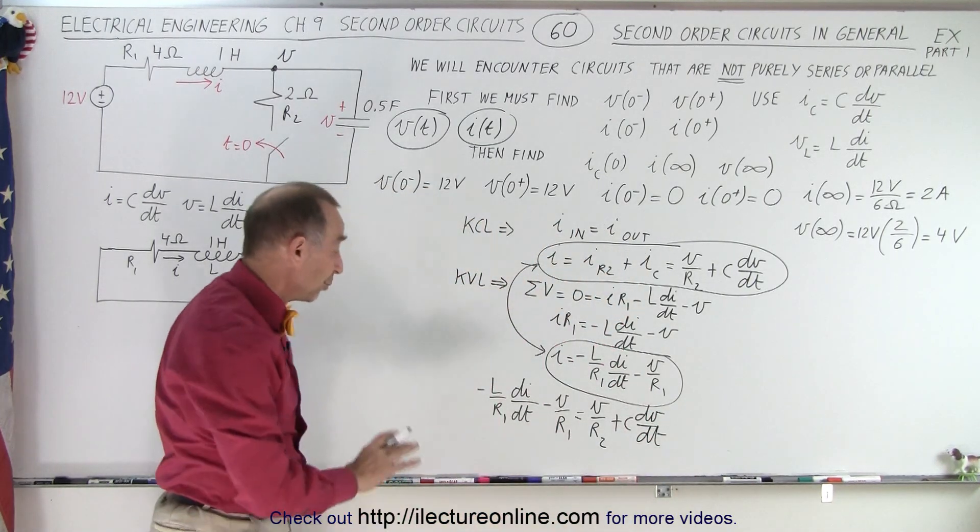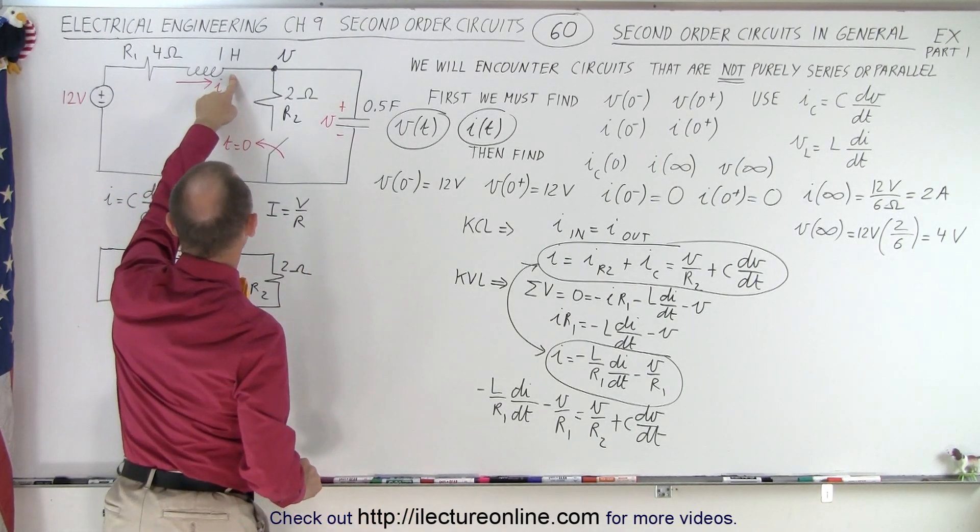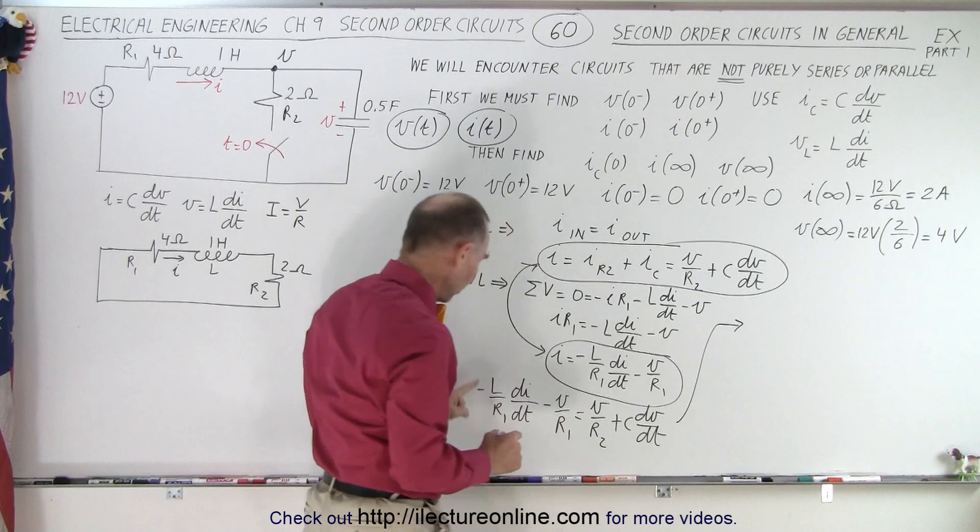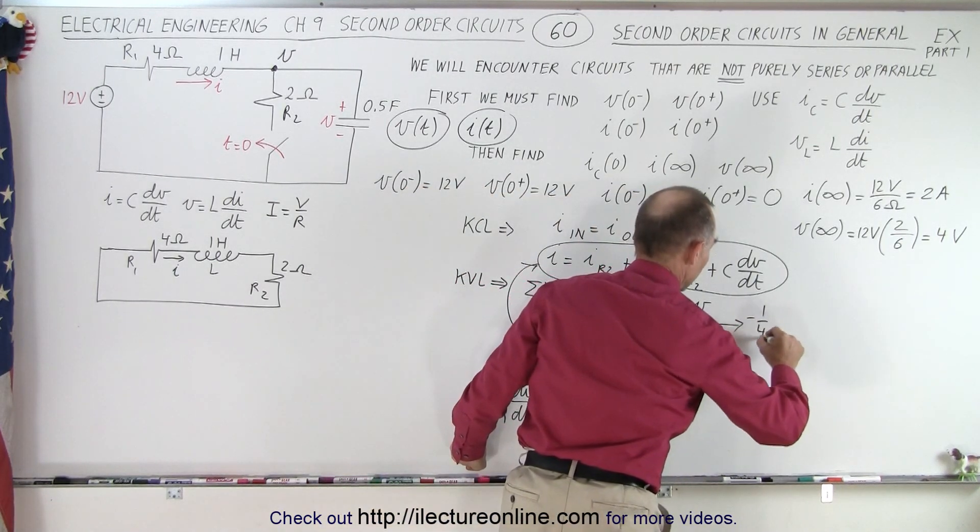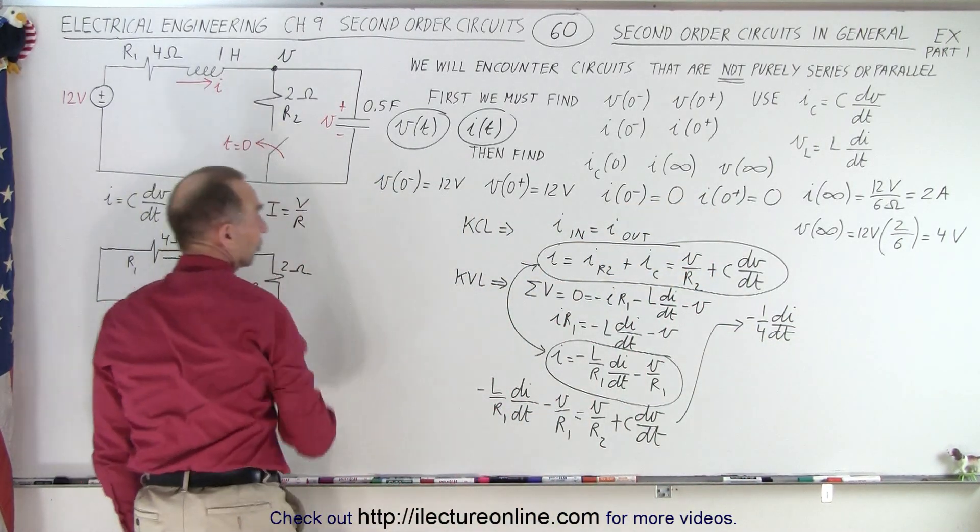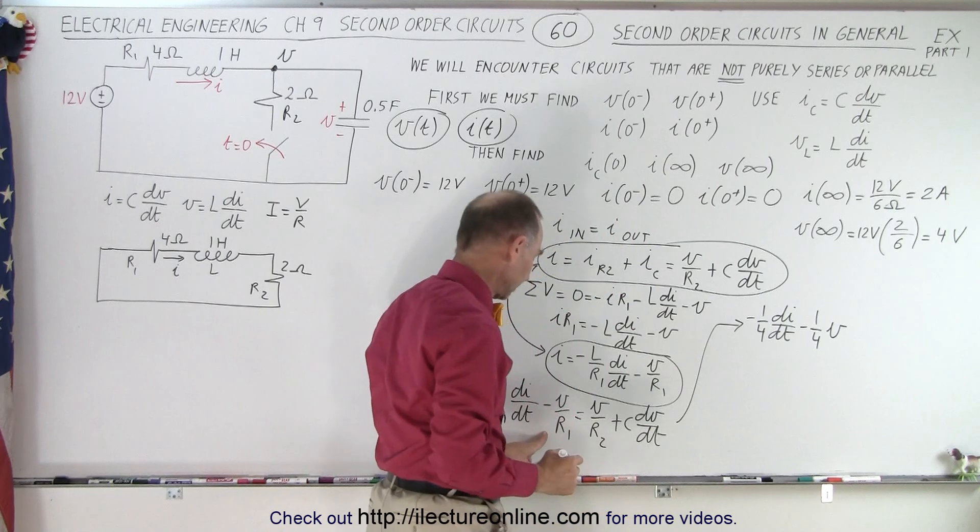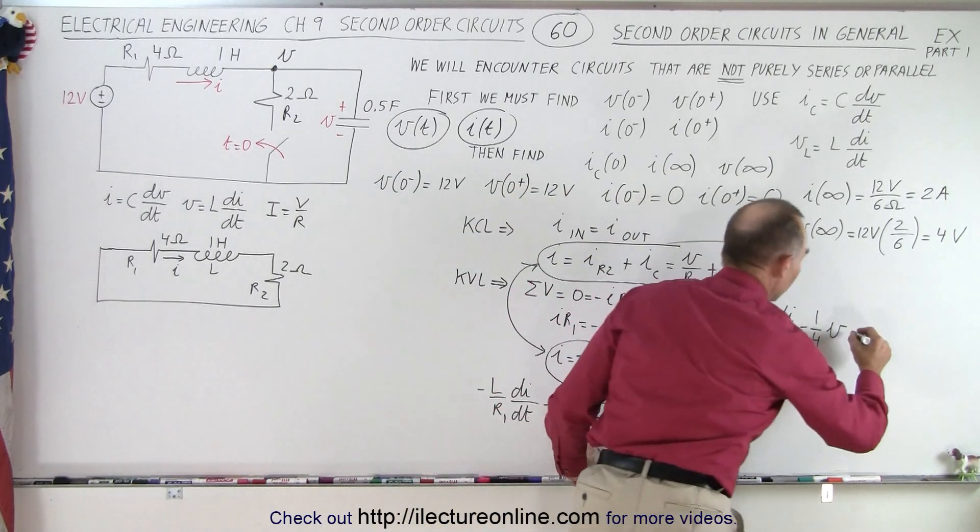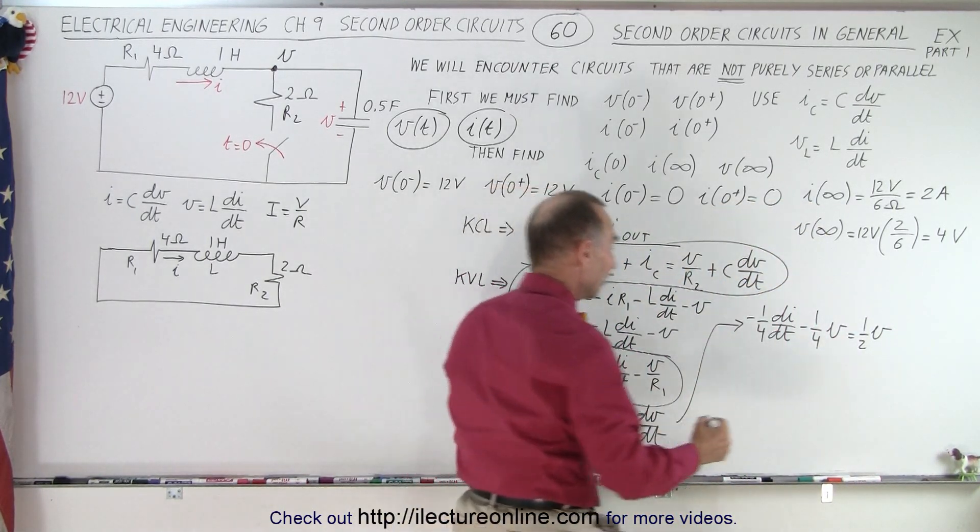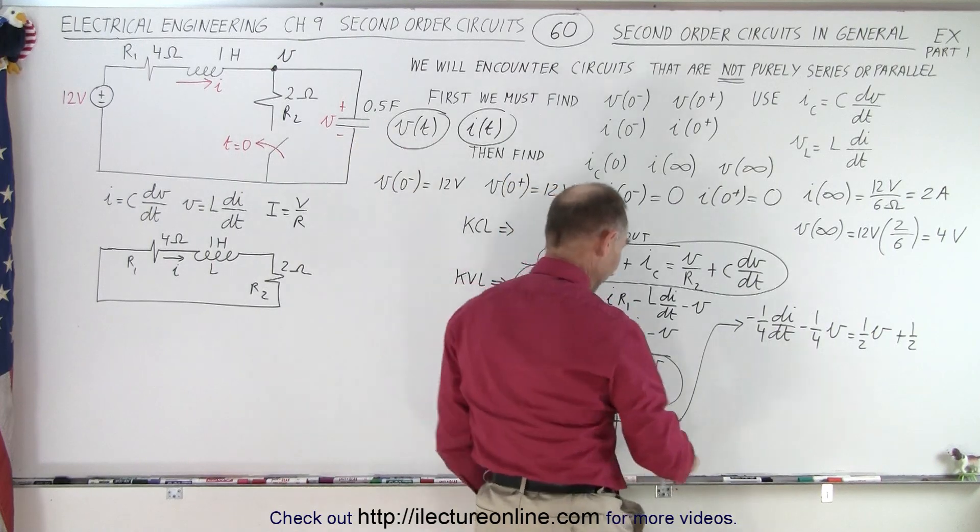And at this point, it might not be a bad idea to get rid of all the L's and the R's and all that and replace them with their values. So we have L is equal to 1 and R1 is equal to 4, so that's 1 quarter. So let me rewrite the equation over here. So it gives me negative 1 quarter dI/dt minus V over R1. R1 is 4, so that's minus 1 over 4 times V. And over here, C is equal to 0.5, which is 1 half. So that would be plus 1 half dV/dt.